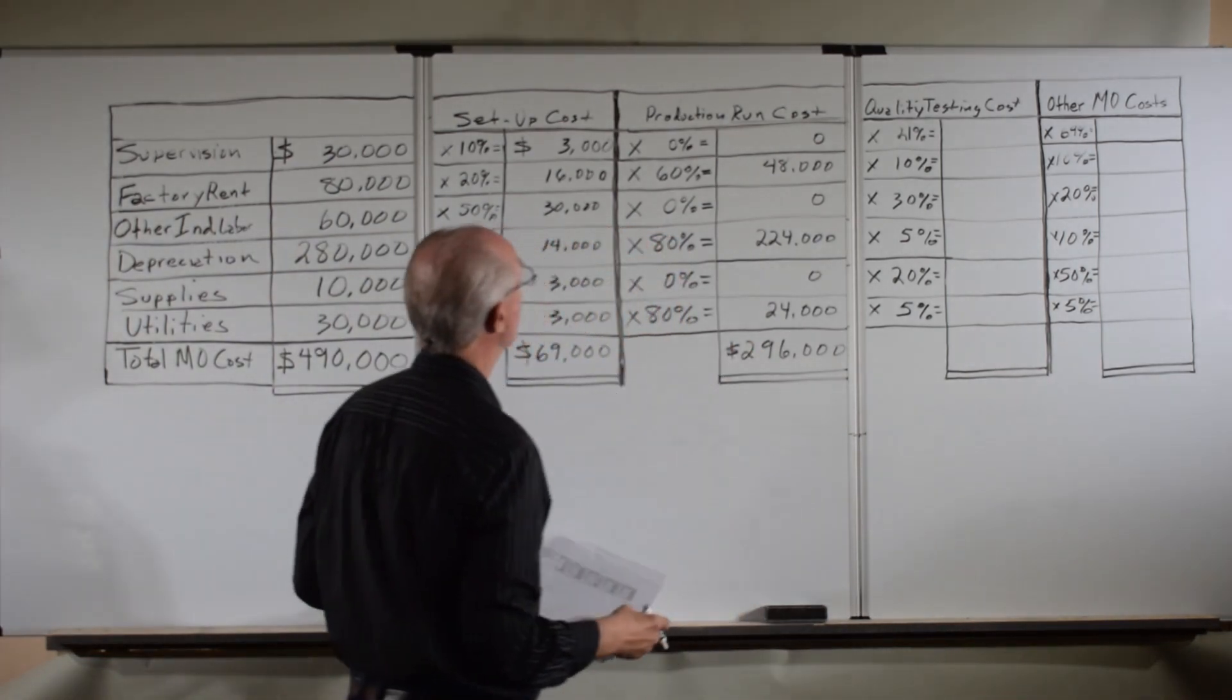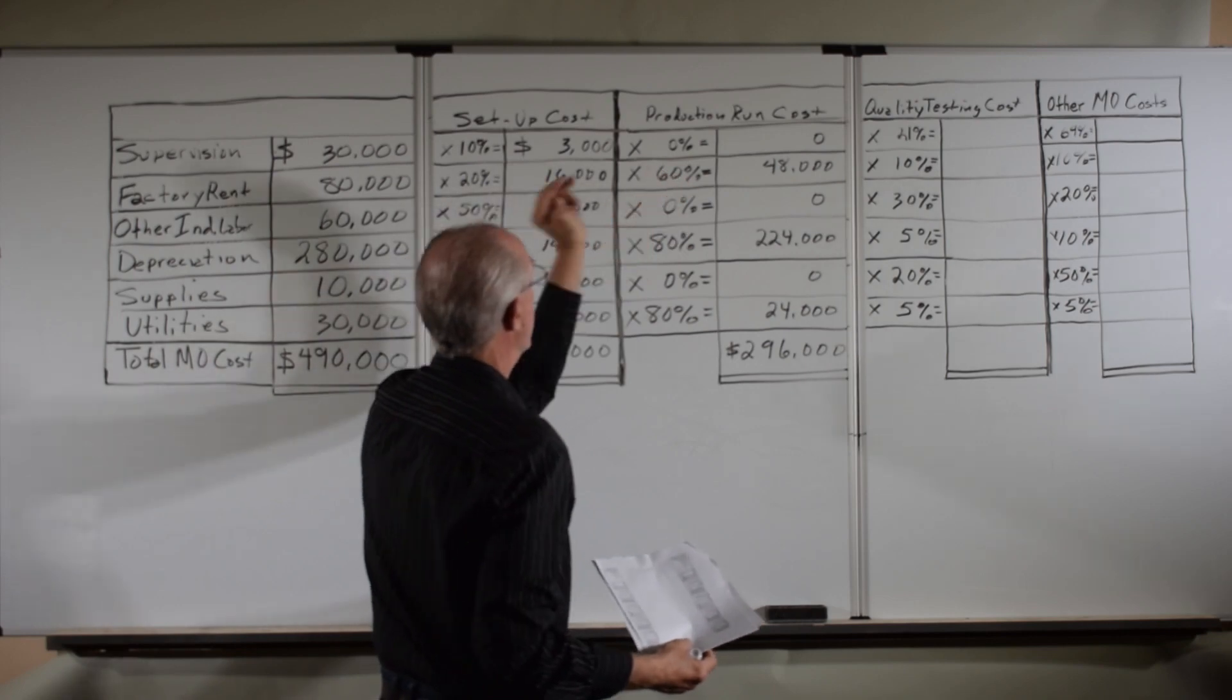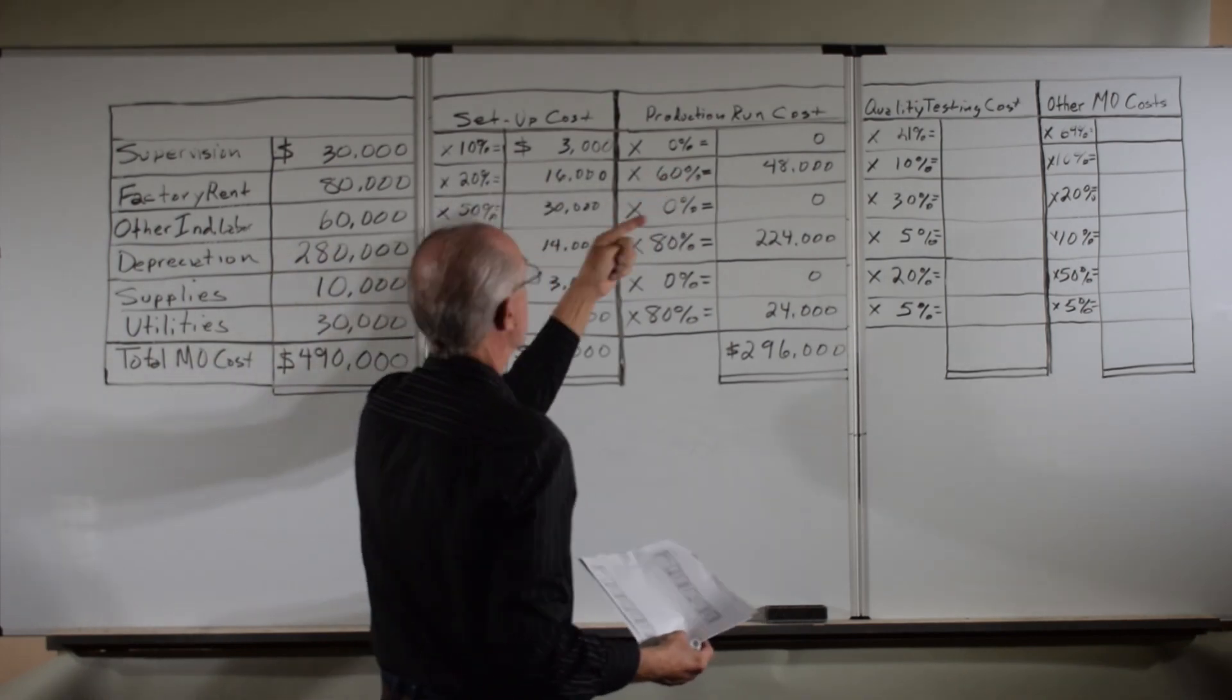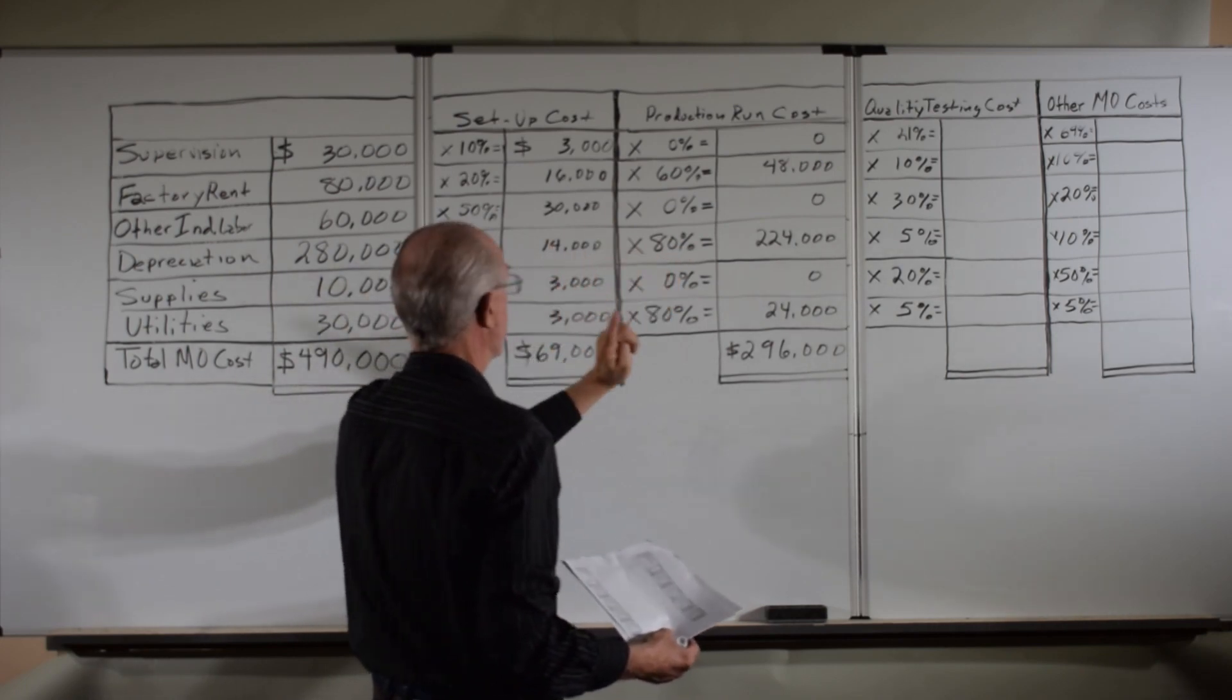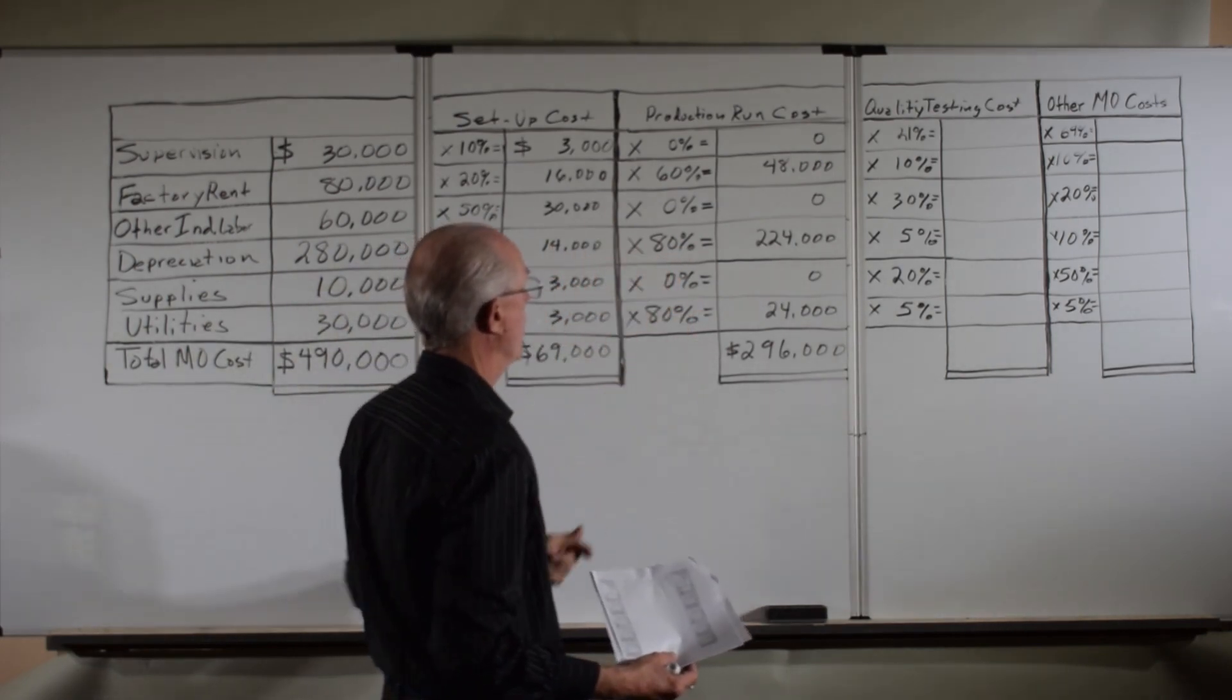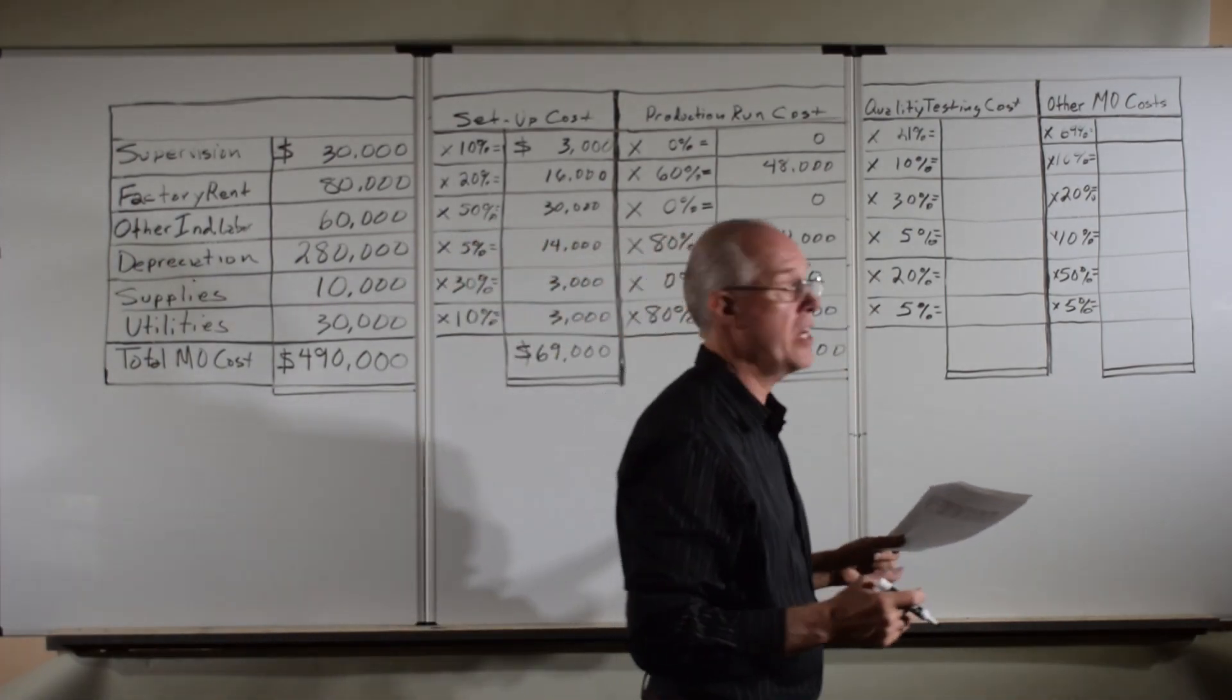We've got zero for supervision, 48,000 for factory rent, zero for the indirect labor, depreciation is 224,000, zero for supplies, utilities 24,000, for a total of $296,000. And now let's go ahead and do the quality testing.